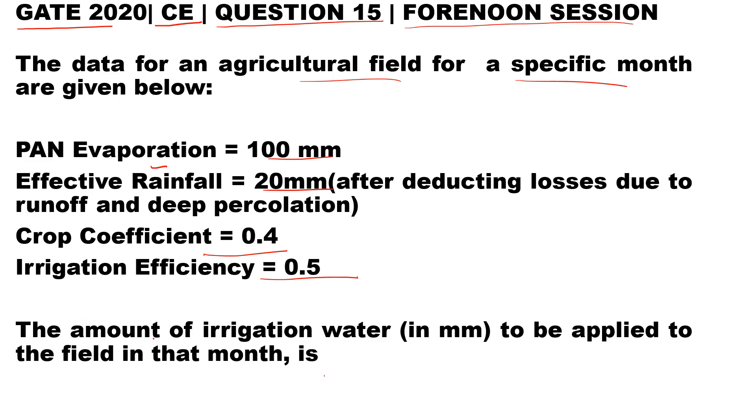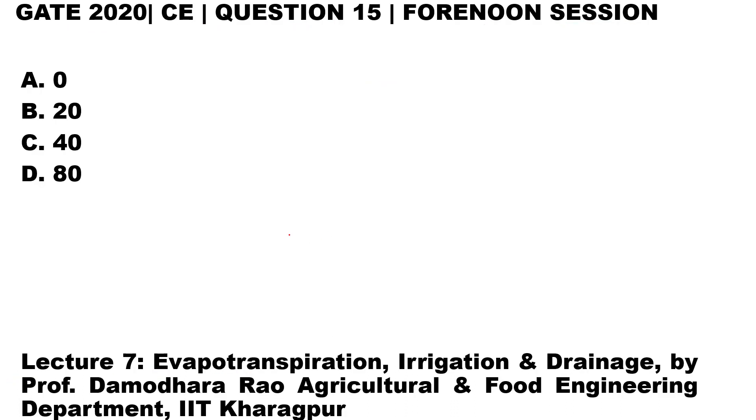And it is asked, the amount of irrigation water in mm to be applied to the field in that month is. Four options are given and we have to identify the correct one.